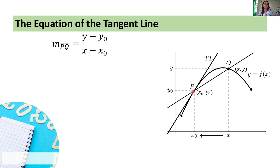Again, our formula in finding the slope is rise over run — we subtract the y-coordinates over the difference of the x-coordinates. In this case, (y minus y₀) over (x minus x₀). That will give us the slope of our secant line PQ.